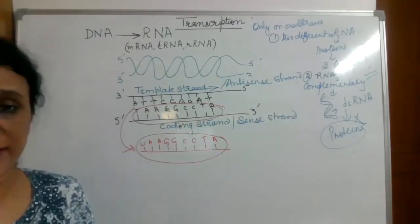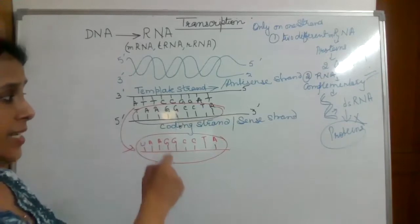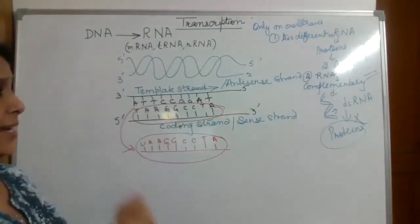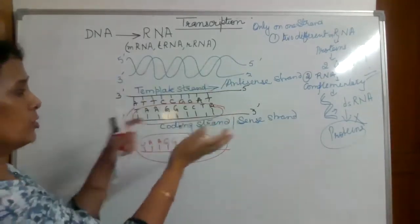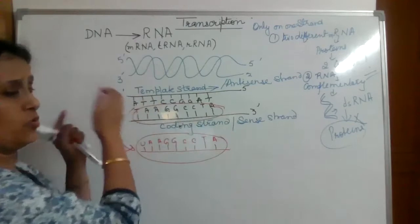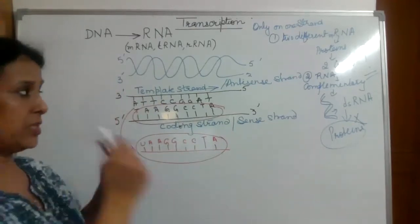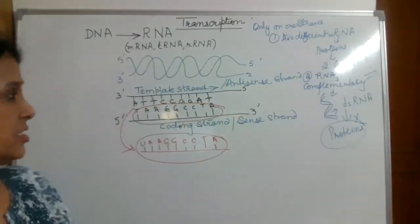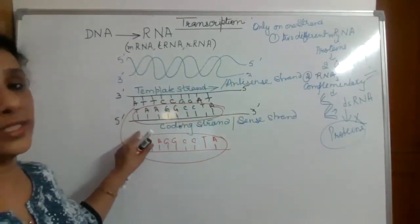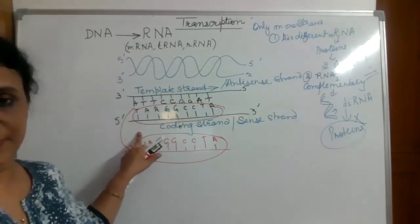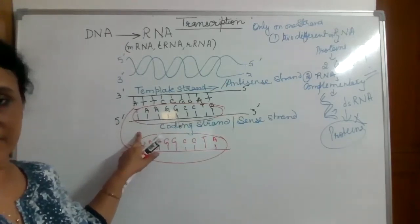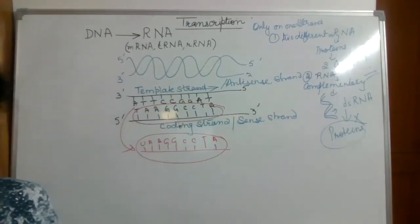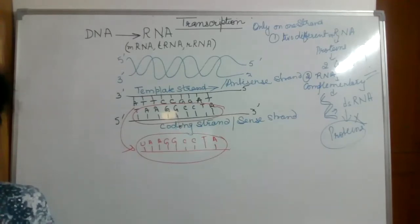Whatever we say regarding transcription — that the promoter is attached to the 5' end and the terminator is attached to the 3' end — we talk in terms of the coding strand. So this part is clear.